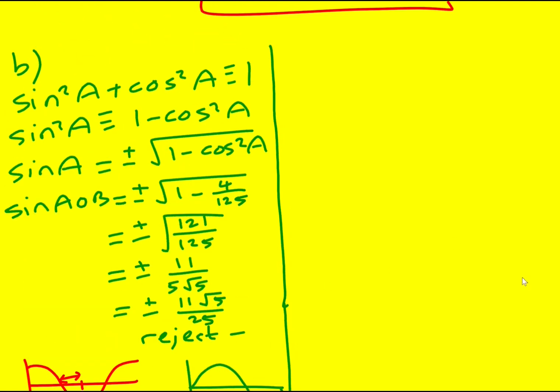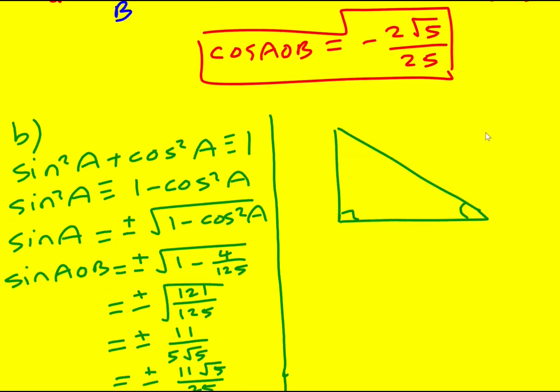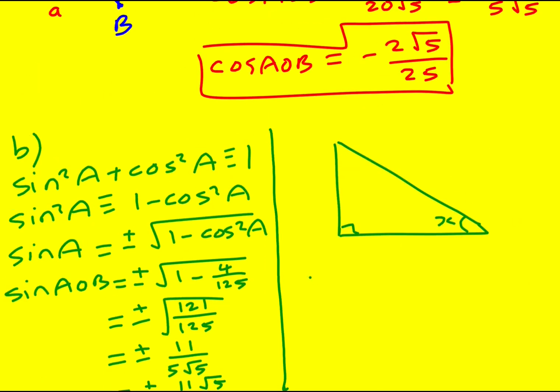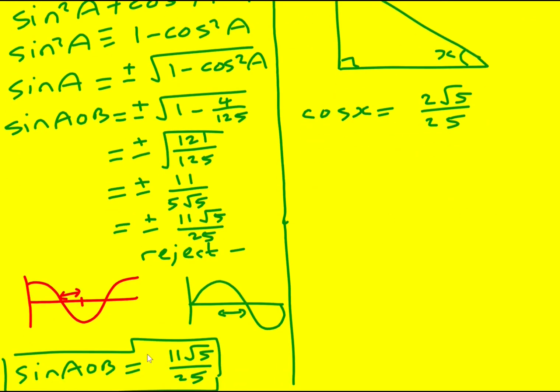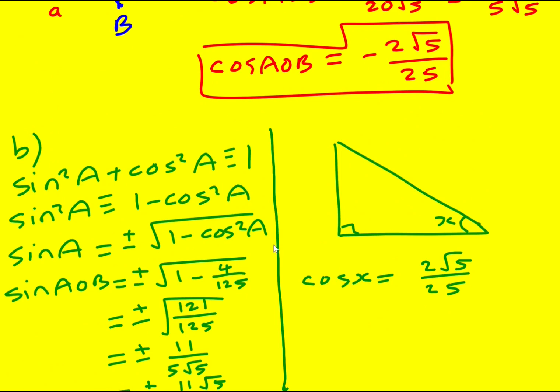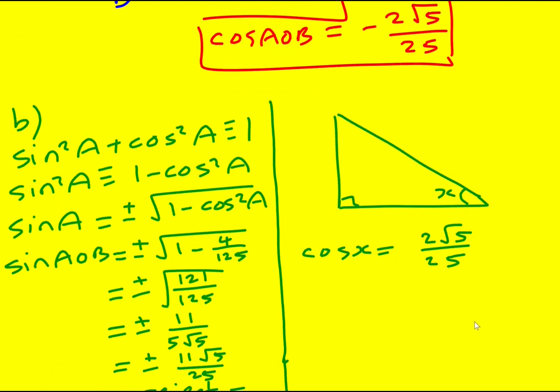Method two. Method two is a bit harder to understand, but actually it's a lot easier in the long run. So I'm going to draw a right angle triangle now which has cos x. I'm going to call it cos x equal to, well I'm going to say that it's 2 root 5 over 25. I'm just going to ignore the negative, because we know actually that you're either going to get a minus sign or a plus sign. We know that from this left hand side. So I've got my cos, and the adjacent is 2 root 5, which is root 20. And then the hypotenuse is going to be 25.